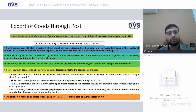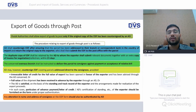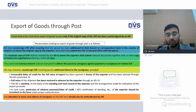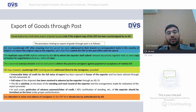For export of goods through post, a preliminary condition is that the original copy of the EDF must be countersigned by an authorized dealer bank. The AD bank shall countersign EDF after ensuring the parcel is addressed to a branch or correspondent bank in the country of import, and return the original copy to the exporter. The exporter then submits the EDF to the post office with the parcel. The duplicate copy of EDF is retained by the AD bank, to whom the exporter shall submit relevant documents within 21 days. The overseas bank shall be instructed to deliver the parcel to the consignee against payment or acceptance.